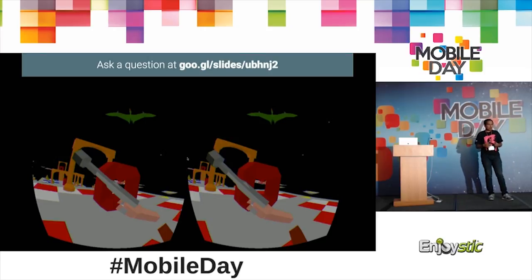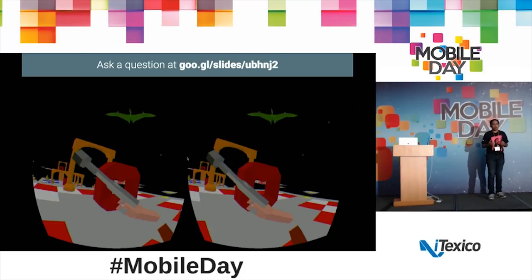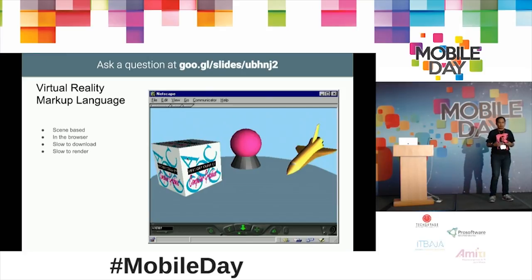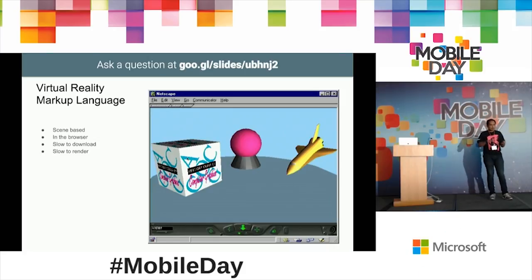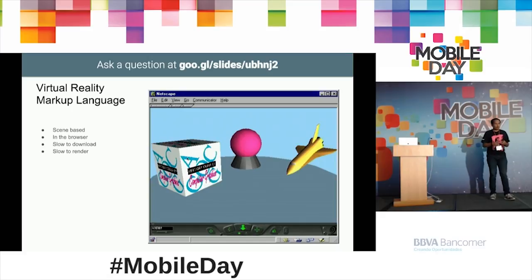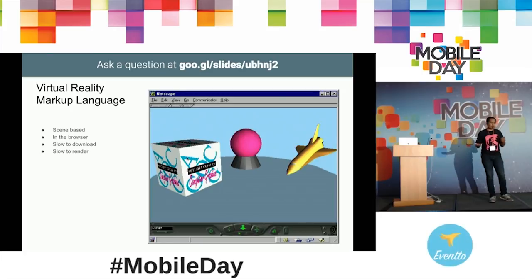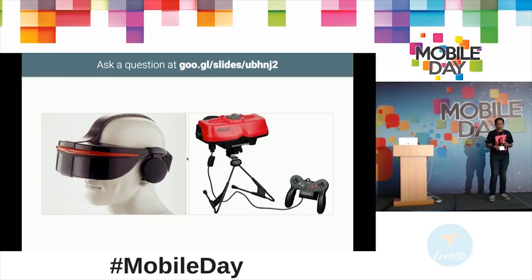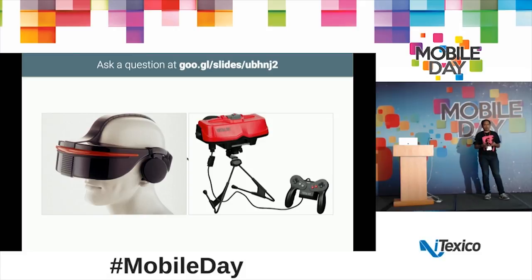What was keeping us back? The hardware. We did not have good enough hardware. When the dot-com boom started, there was something called Virtual Markup Language — a language similar to what we have now, where you build a web page and define objects and it creates a VR scene. But the internet was slow, graphics processors were not up to the mark, and eventually the dot-com bust came. There were other attempts like Sega VR and Virtual Boy, but the hardware just wasn't up to the mark.